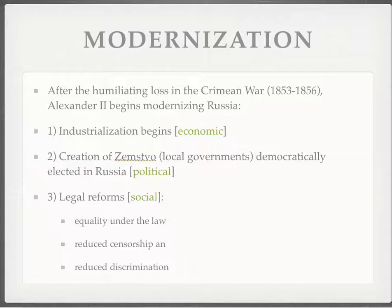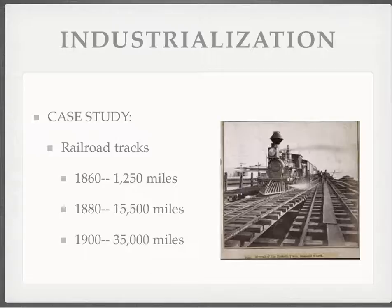The most significant of those reforms was equality under the law, which is crucial to make known to the country — that's the direction Alexander II was headed. And here's a case study of one of those: the industrialization. Look at the increase in railroad tracks between 1860 and 1900 — it's major. This is a result of the loss in the war, but also a Russia that wants to industrialize and be a major player on the world stage. They're behind, and it's time to get going.